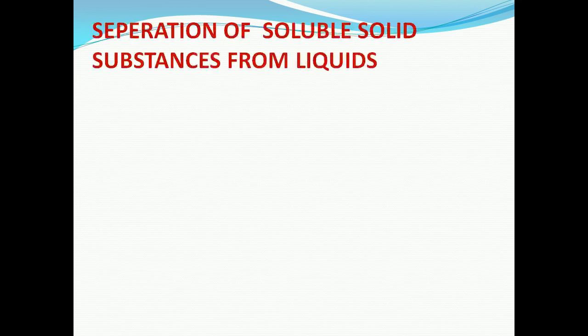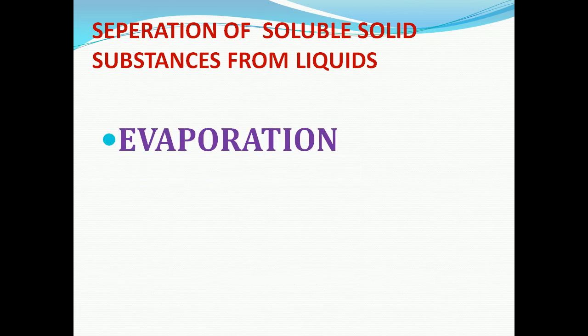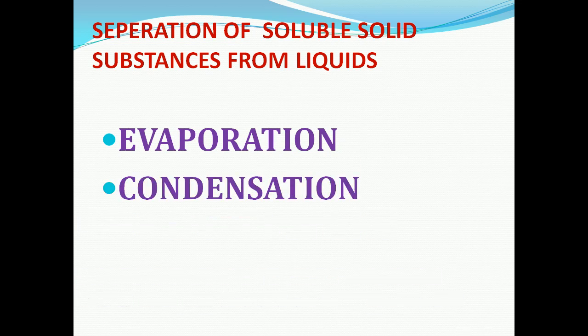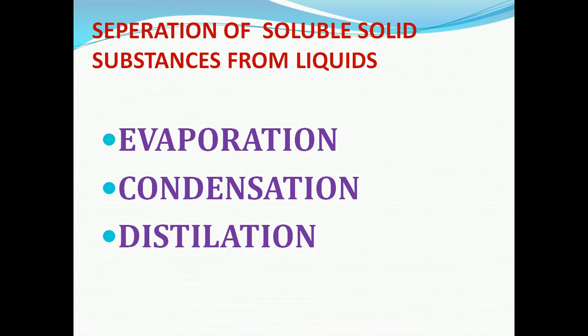So how can we separate soluble solid substances from liquid? Soluble solid substances means substances which will dissolve in the liquid. Once it dissolves in the liquid, how can we separate that solid substance? For separating soluble solid substances from liquids we are using the following techniques: evaporation, condensation, and distillation.